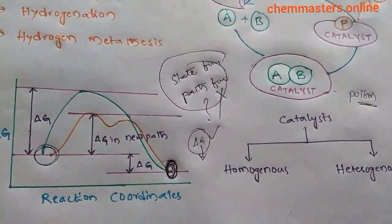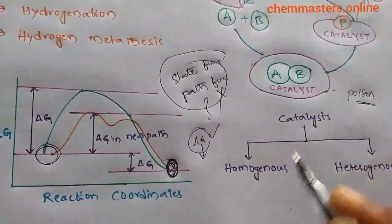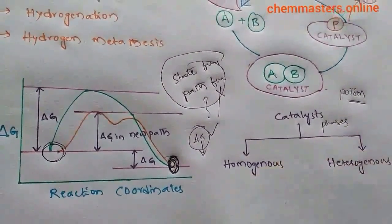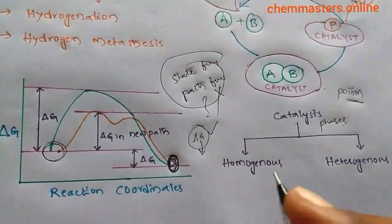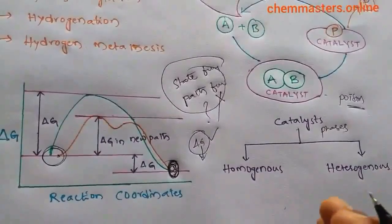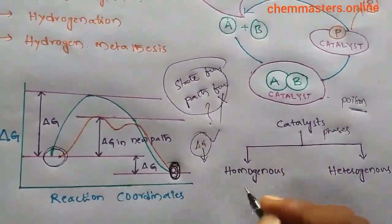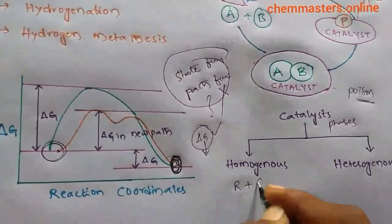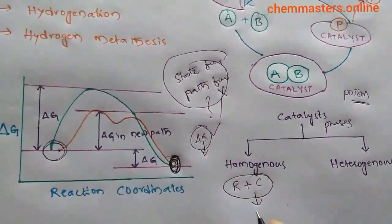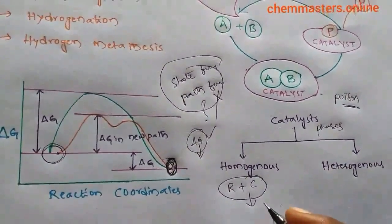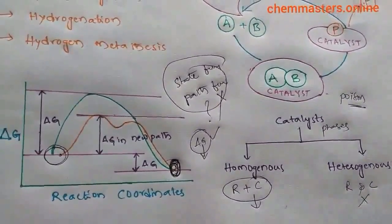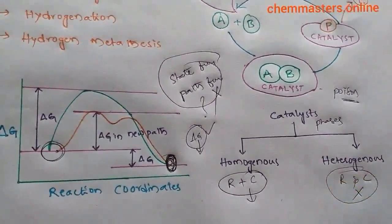Now entering the main topic: catalysts are classified into two types — homogeneous catalysis and heterogeneous catalysis. In homogeneous catalysis, the reactants and catalyst are in the same phase. If the reactants and catalyst are not in the same phase, it is considered heterogeneous catalysis.